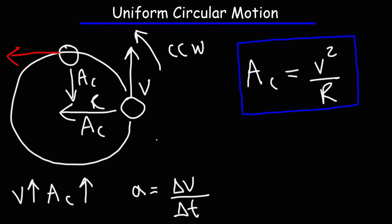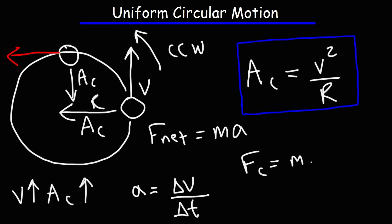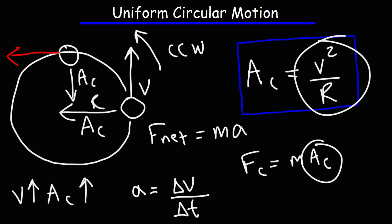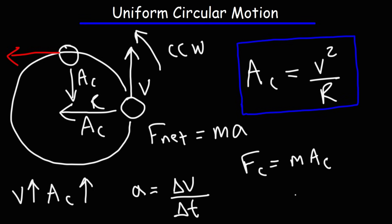According to Newton's second law, the net force acting on an object is equal to the mass times the acceleration. So anytime you have an object moving in a circle, there's going to be something called a centripetal force, and it's equal to the mass times the centripetal acceleration. Replacing ac with v²/r, we get the formula for the centripetal force, which is mv²/r.